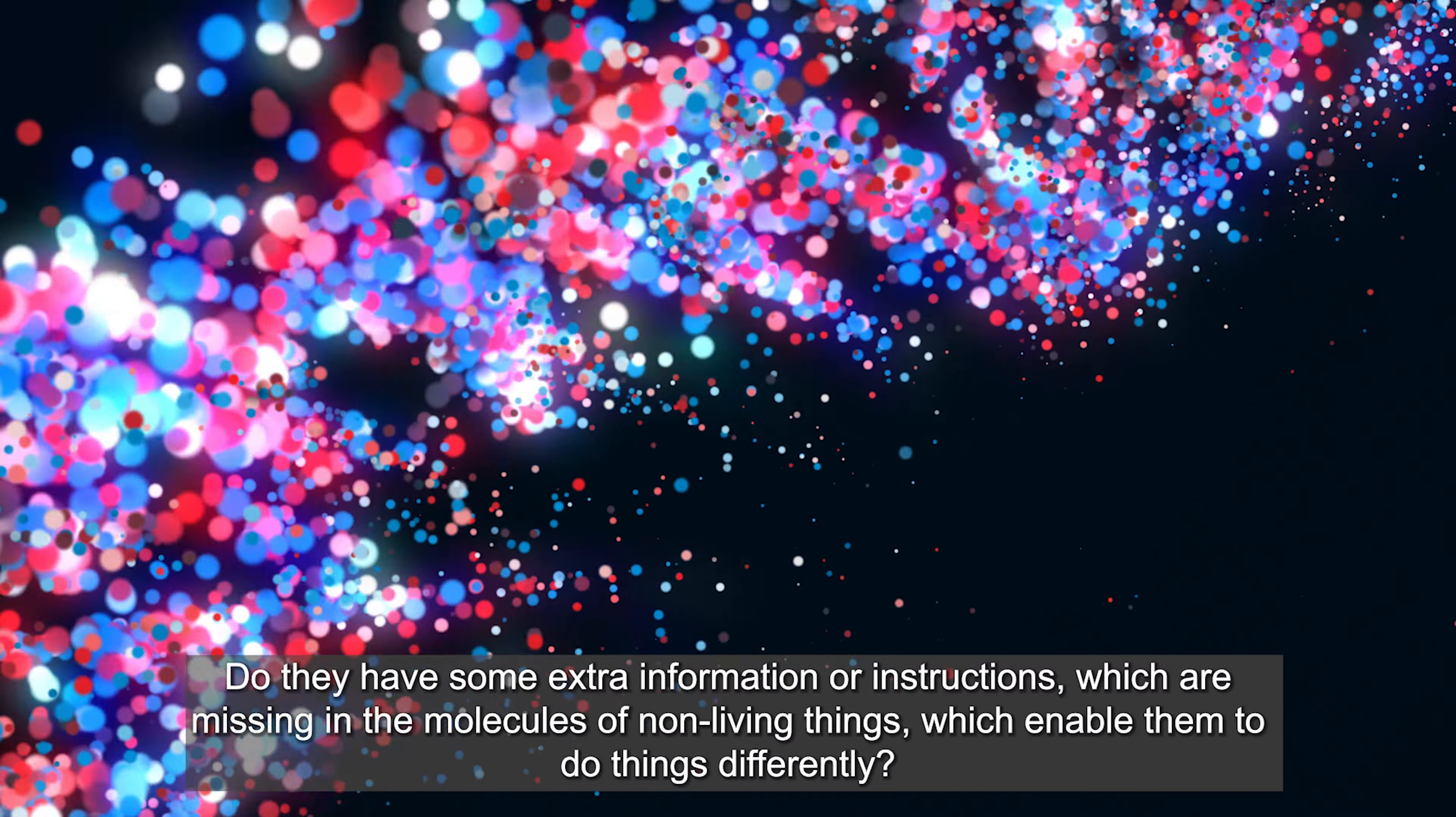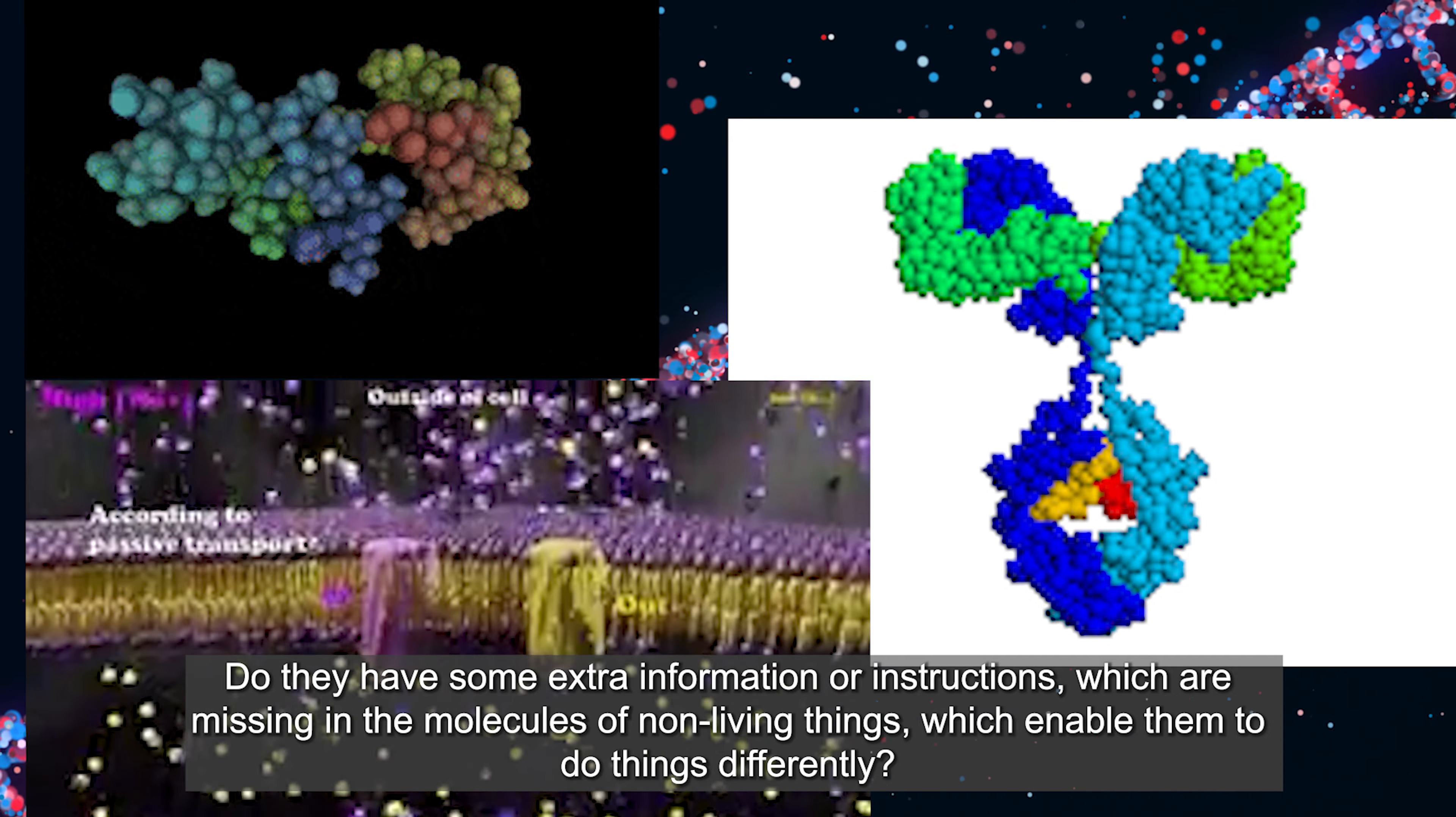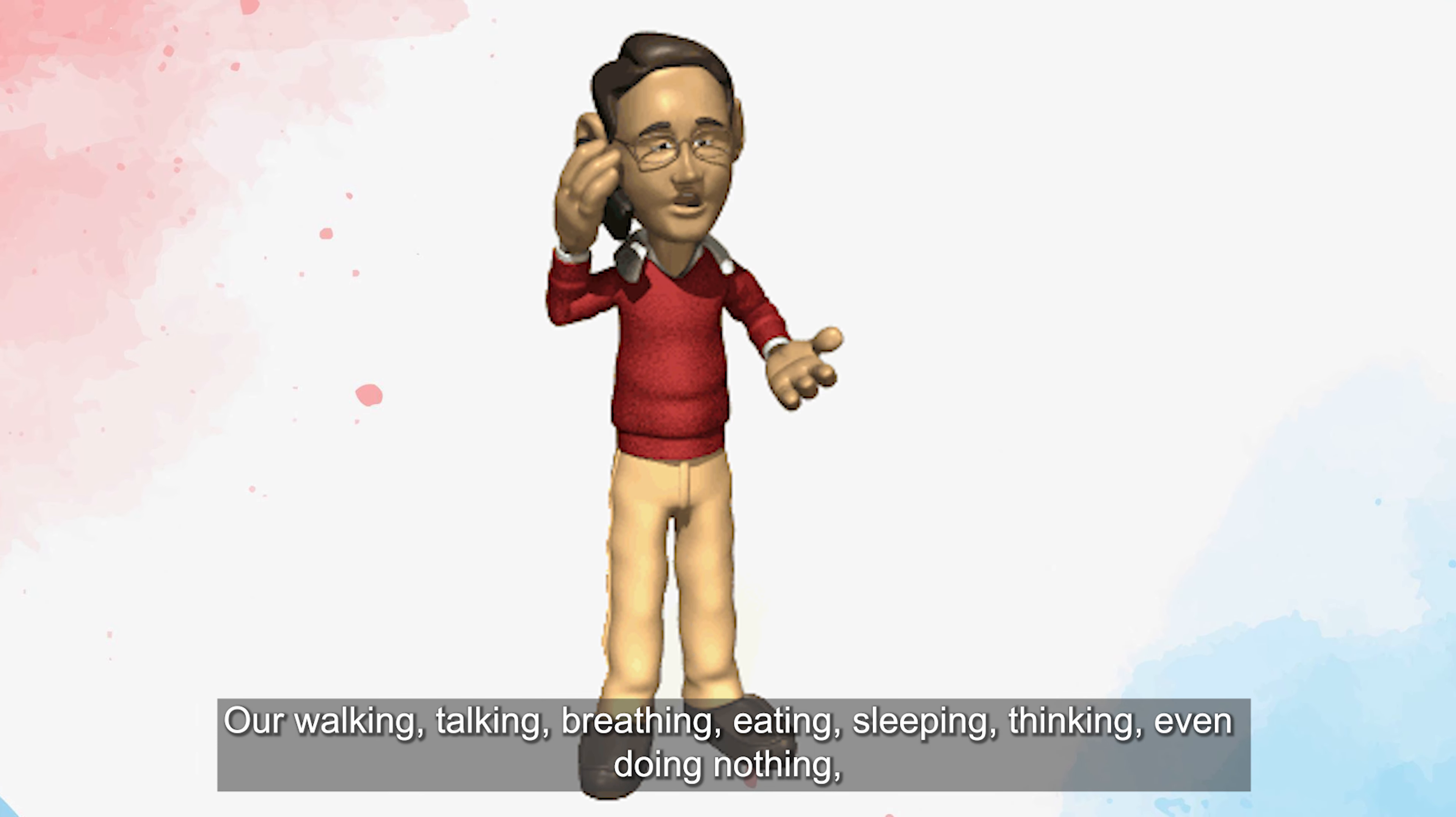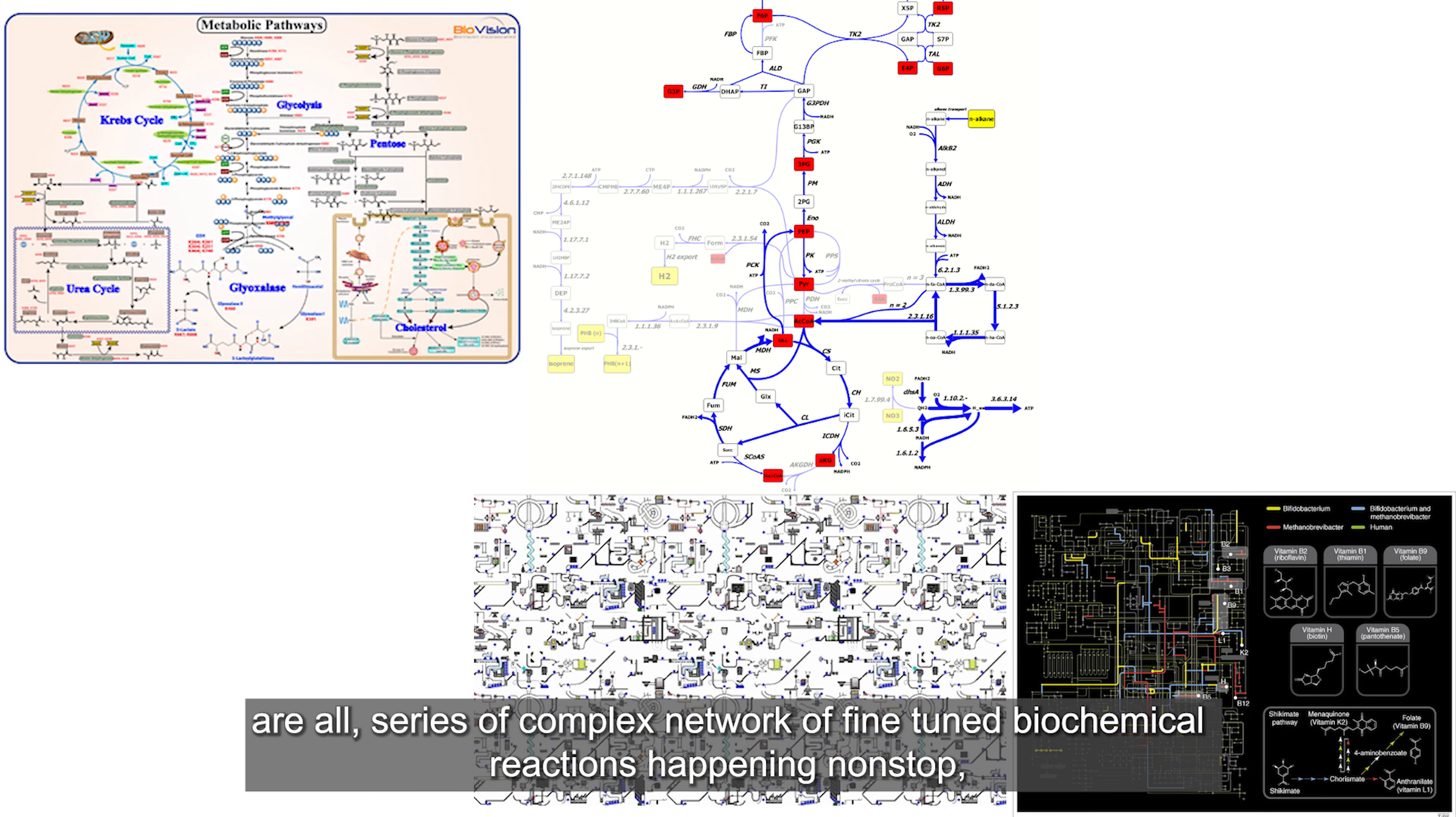Do they organize themselves in some specific arrangements or unique structures that they become the molecules of life aur unke paas aisi kaunsi extra information ya instructions hain that they are able to do things differently? Aur jo ek non-living thing ke atoms ya molecules mein nahin hain. But their extraordinary chemistry is the reason there is life.